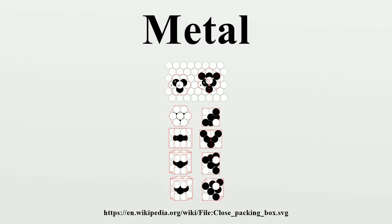Chemical properties: Metals are usually inclined to form cations through electron loss, reacting with oxygen in the air to form oxides over various timescales. Examples: 4Na + O2 → 2Na2O; Ca + O2 → CaO; 4Al + 3O2 → 2Al2O3. The transition metals are slower to oxidize because they form a passivating layer of oxide that protects the interior.